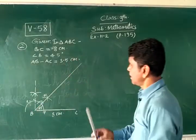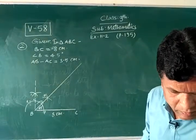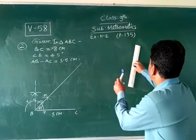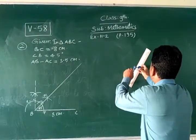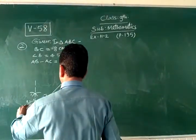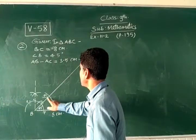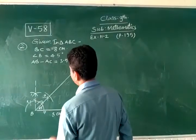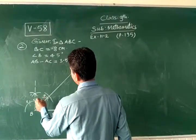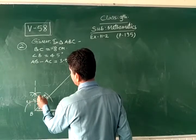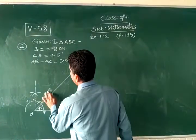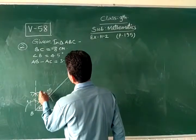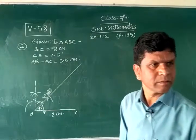And now AB minus AC is 3.5 cm. We have taken on ray 3.5 cm. We measure and with center B cut it here, this is 3.5 cm. And we are giving the name, since AB minus AC is 3.5, so we are giving here the name A. Now AD minus AC is 3.5 cm. Suppose we are giving here name D.